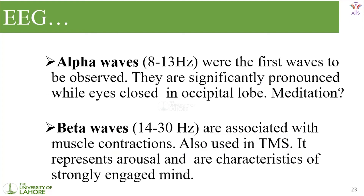Alpha waves are significantly pronounced when a person's eyes are closed. It's like being totally awake, fully in one's mental state, doing meditation — sitting still, not moving muscles or limbs, just thinking or not thinking at all. At that point we get alpha waveforms. Beta waveforms are associated with muscle contractions, with a frequency of 14 to 30 Hz. Whenever there are movements or exercises, we get beta waveforms. It represents arousal and an active, engaged mind — like when a person is solving puzzles.